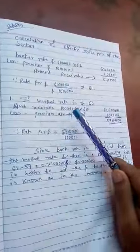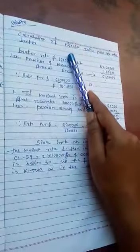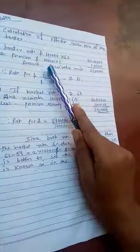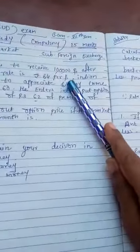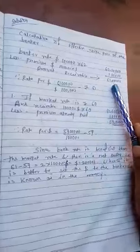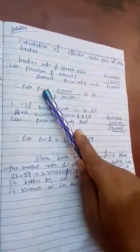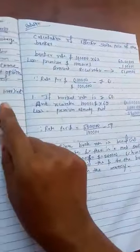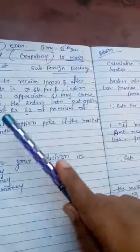First, calculate the effective strike price for the banker. The banker rate: 1 lakh into 62 equals 62 lakhs. Less premium in dollars: 1 lakh into 1 equals 1 lakh, because premium is 1 per dollar.